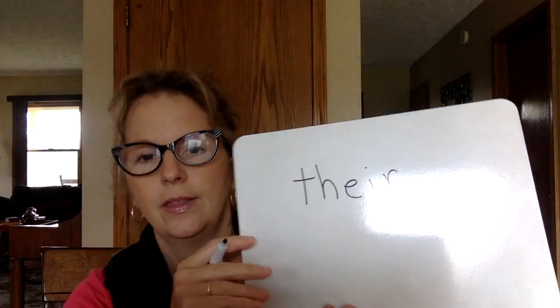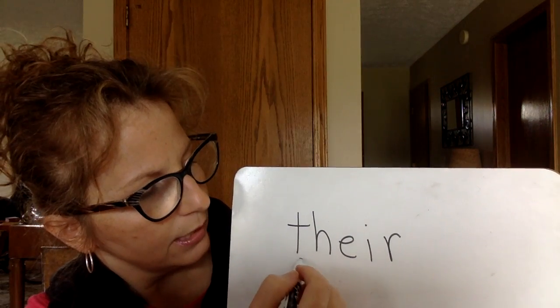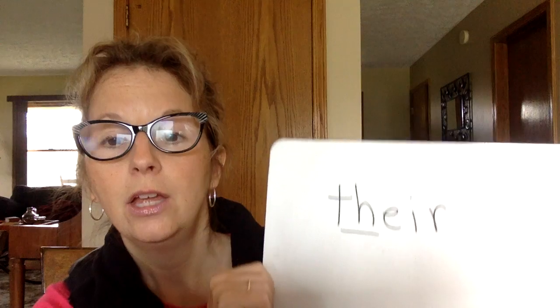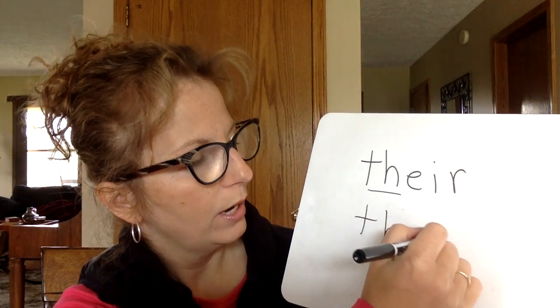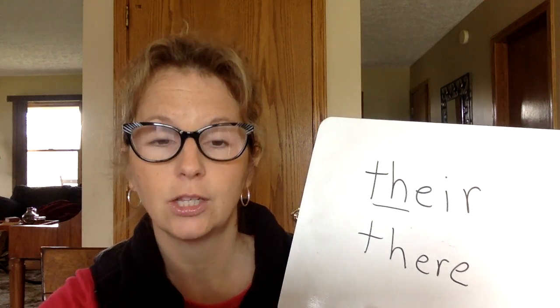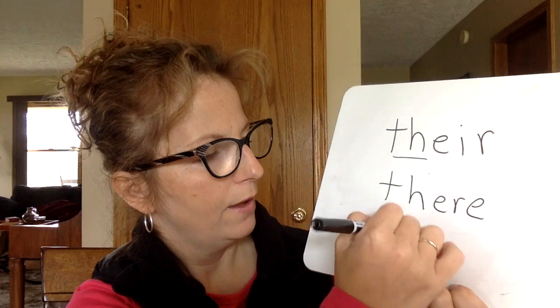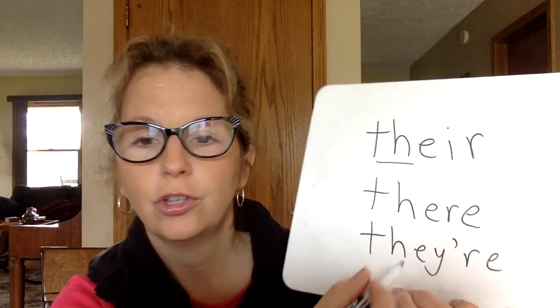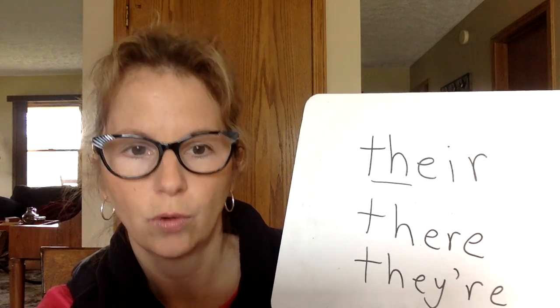The last word we're going to do today was a tricky sight word we worked on earlier — the word 'their,' meaning belonging to them, as in 'It is their cat.' T-H making that 'th' sound, then E-I-R. Just so you know, there are other ways to write 'there': T-H-E-R-E means a place — 'go put that paper over there' — and 'they're' is a contraction for 'they are,' as in 'They're going to the store.'